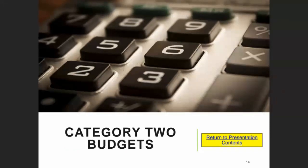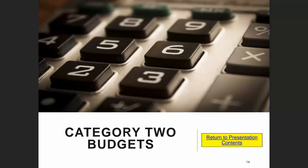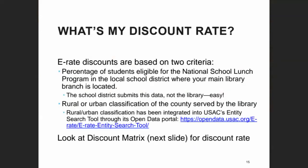On to Category 2 budgets. Let's talk about the discount rate first. In E-Rate, your library has a discount rate calculated every year based on two criteria. The first is the percentage of students who qualify for free and reduced lunch in the school system where your main branch is located — that information is gathered by schools and sent as updates to the portal, so you don't have to worry about tracking that.